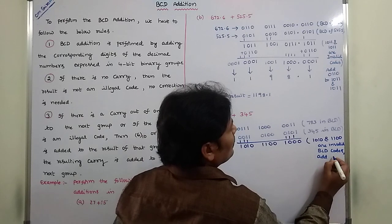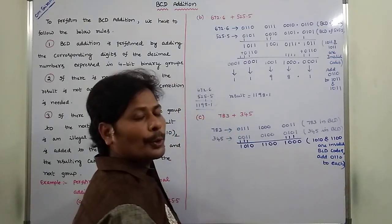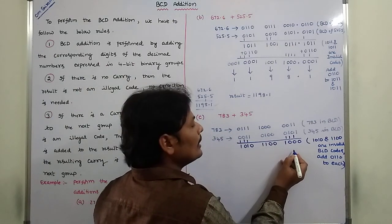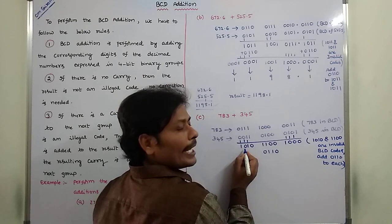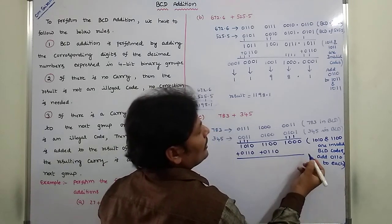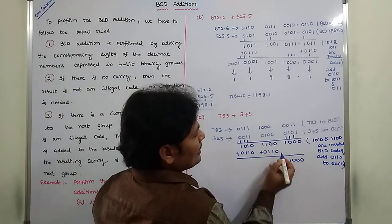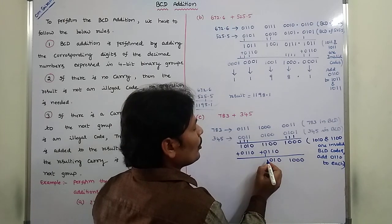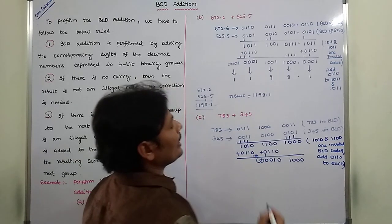To correct the invalid codes, we add 0110 to each invalid group. For the valid code 1000, there is no change. For the invalid 1100 and 1010, we add 0110 to each. Adding 0110 to 1010: 0+0=0; 0+1=1; 1+1=0 carry 1; 1+1+0=0 carry 1. This carry 1 is forwarded to the next higher 4-bit group.